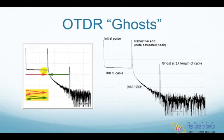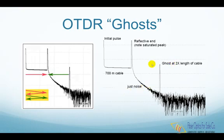When the OTDR sends a test pulse down the cable, the big reflection from the far end comes back to the OTDR, showing up on the trace as an overloaded reflection. It is then reflected from the OTDR interface back down the cable for a second trip, effectively becoming a second test pulse, which is reflected back from the far end yet again and recorded as a second trace. If the reflections are big enough, this process can go on three or four times, each time producing a ghost event on the OTDR trace.